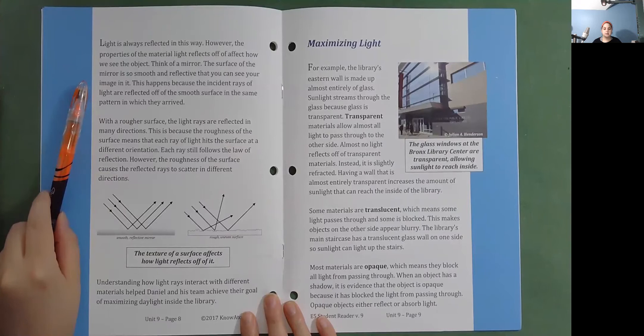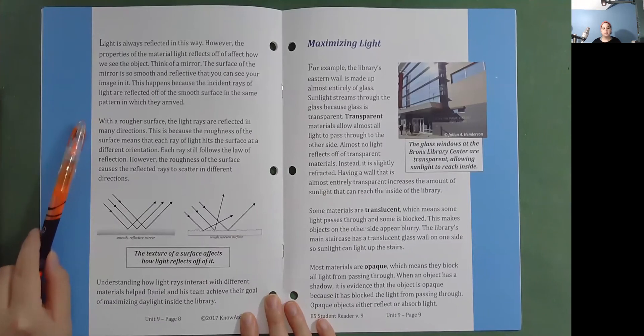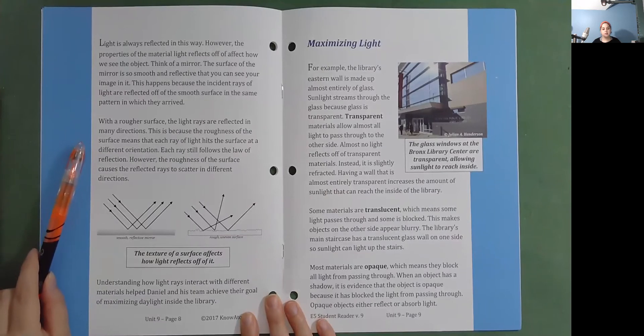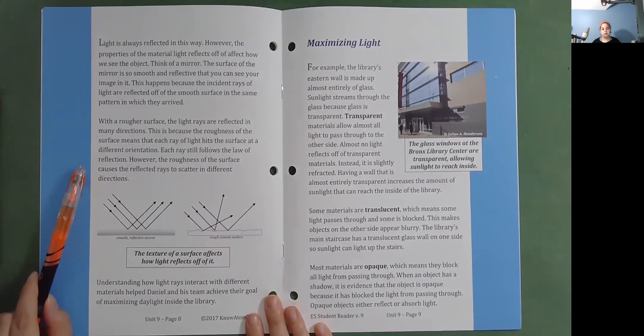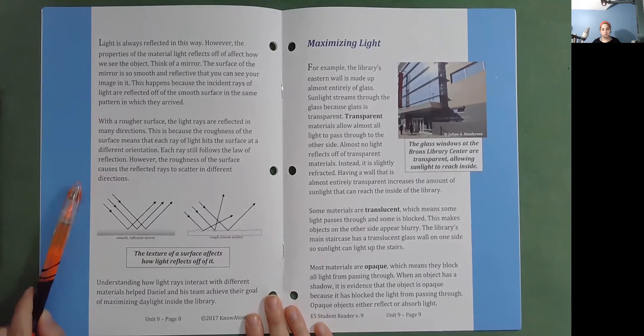This happens because the incident rays of light are reflected off of the smooth surface in the same pattern in which they arrived. With a rougher surface, the light rays are reflected in many directions. This is because the roughness of the surface means that each ray of light hits the surface at a different orientation. Each ray still follows the law of reflection. However, the roughness of the surface causes the reflected rays to scatter in different directions.